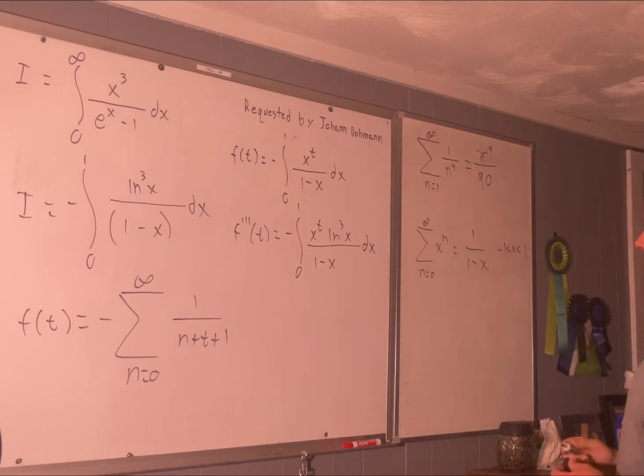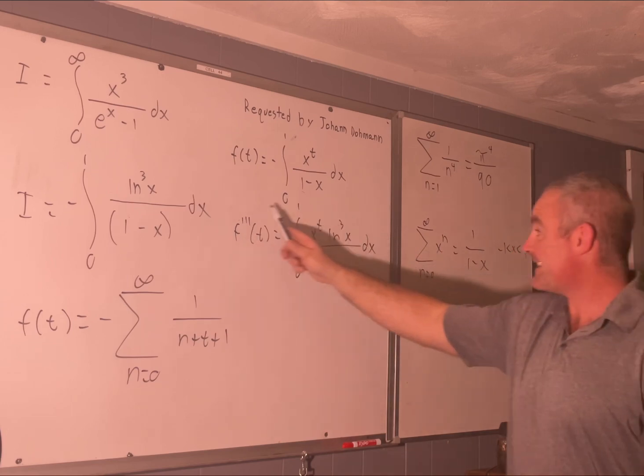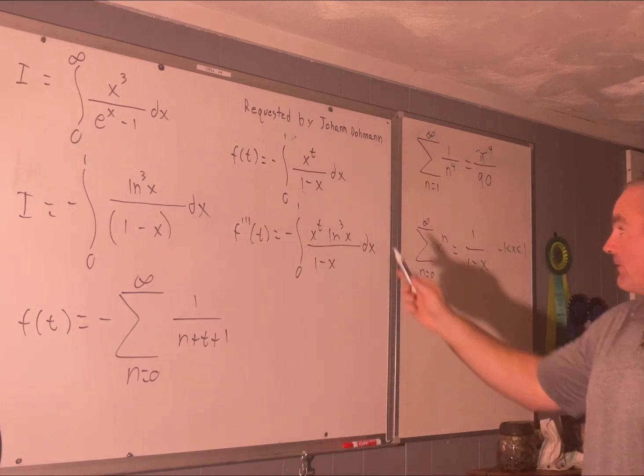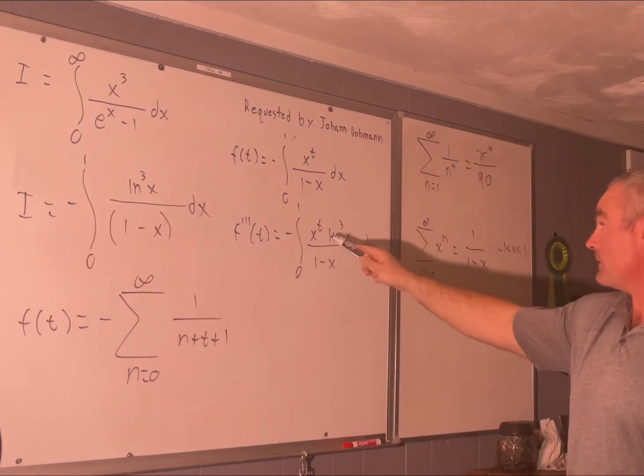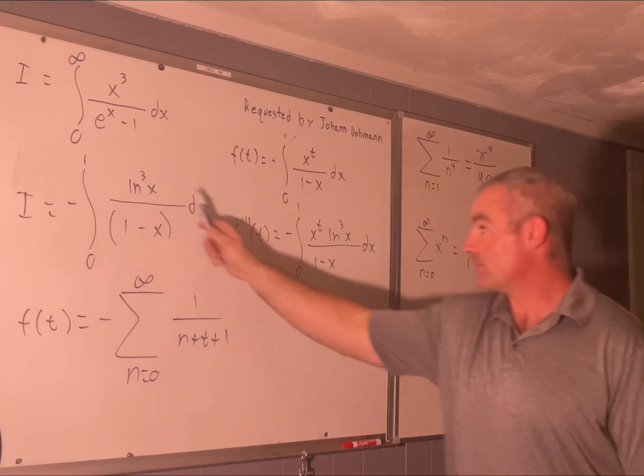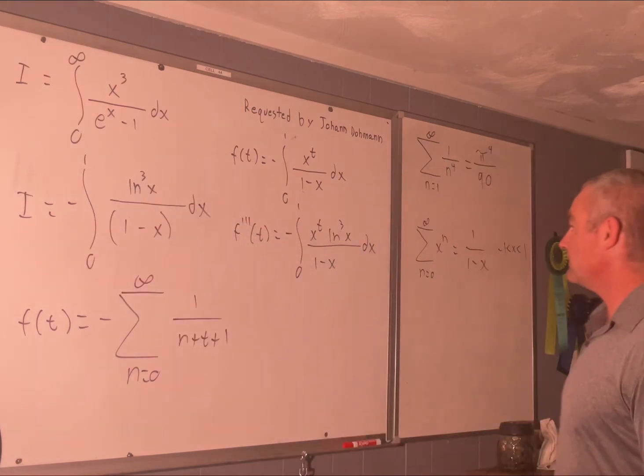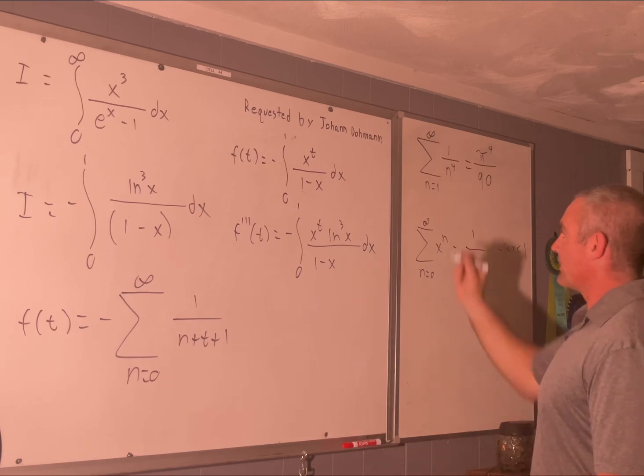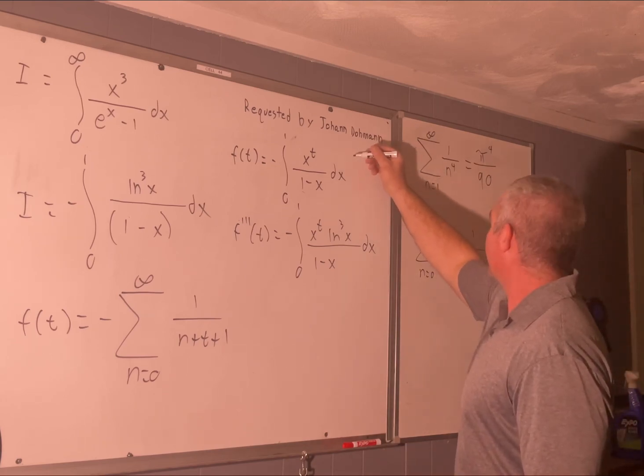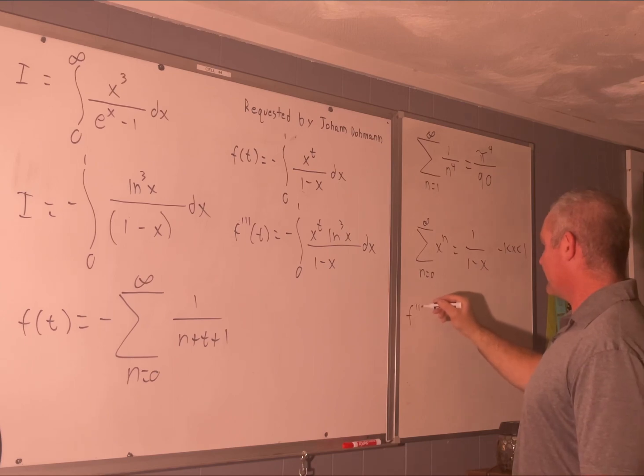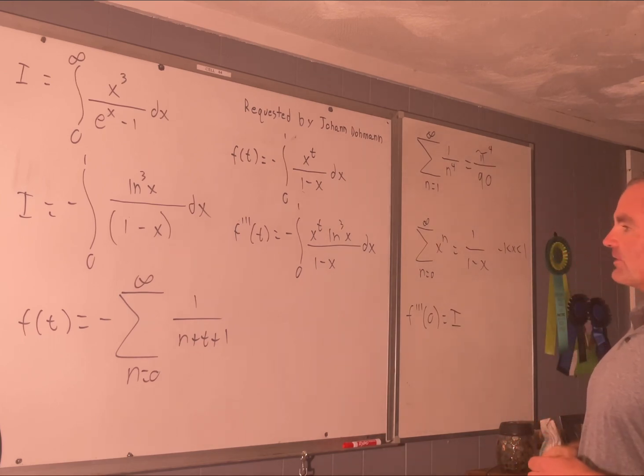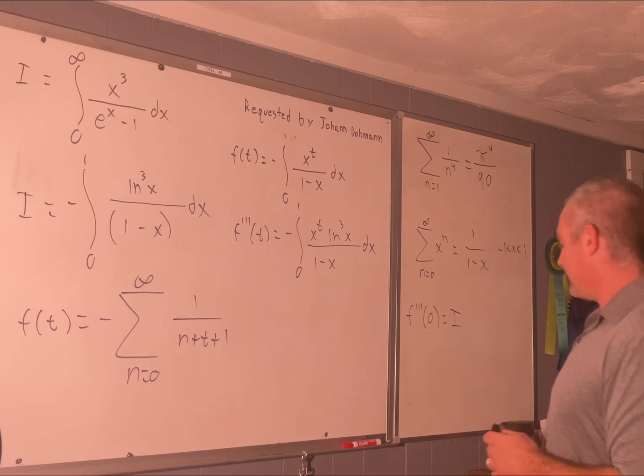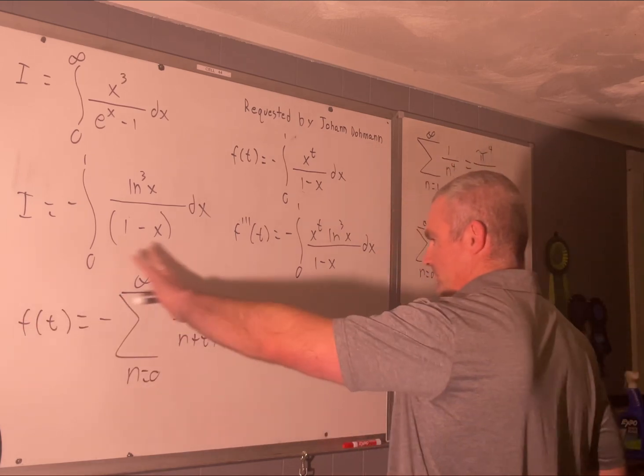And I'm not going to do each derivative out. I'm just going to jump right to what it is, because it's not that hard. So f triple prime of t is going to be equal to negative integral 0 to 1 of x to the t times the natural log cubed of x over 1 minus x dx. Okay. And from here we can see that our f triple prime evaluated at the point t is equal to 0 is going to give us i, because this will become a 1 and then it will perfectly match i. Okay. So let's write that down. f triple prime evaluated at the point 0 is equal to i.